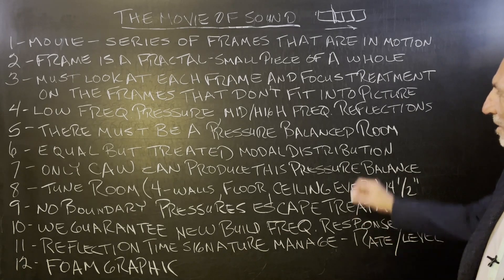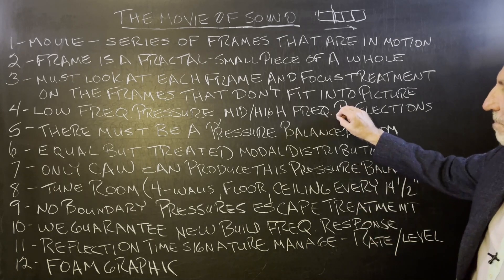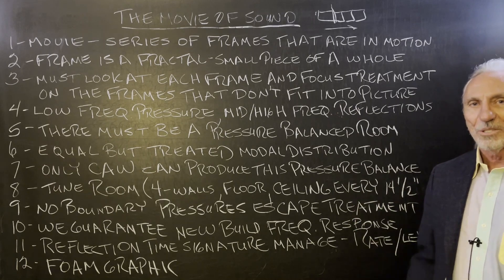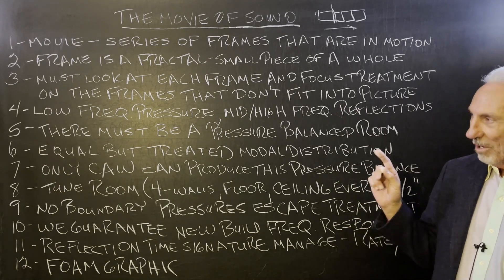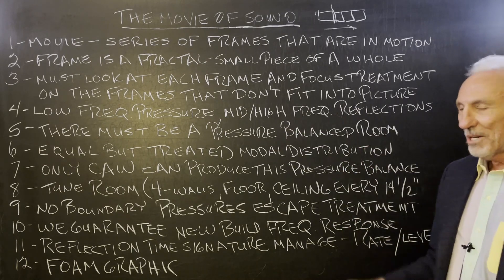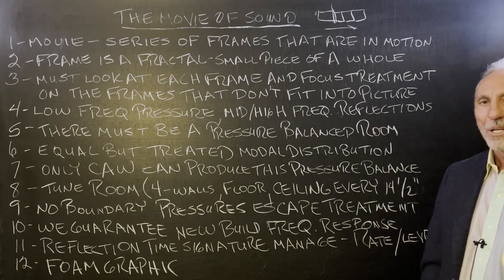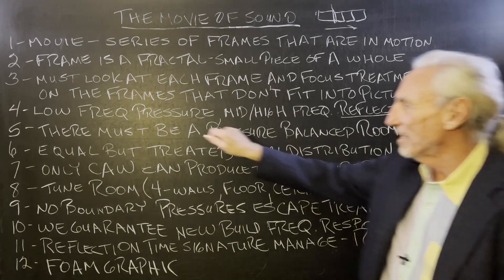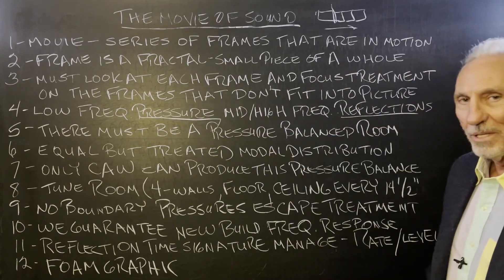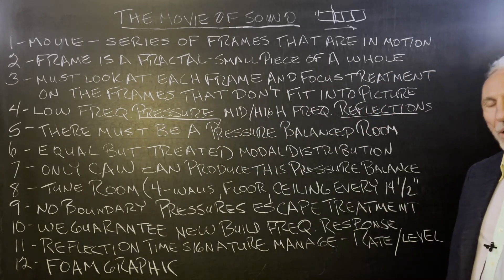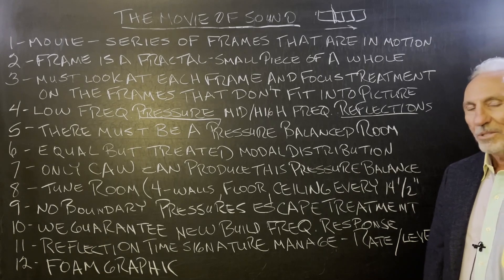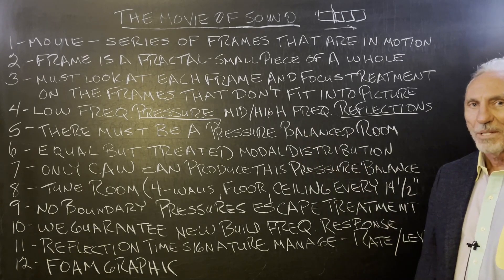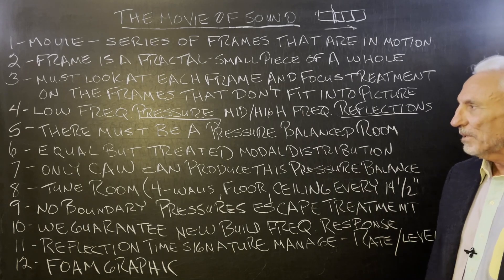You have to look at the whole picture: low frequency pressure, and mid and high frequency reflections. Just start to think that way — low frequency pressure below 100 Hz, and then middle and high frequency reflections. Those are your two main categories. This doesn't have to be hard. I know there's a lot of misinformation out there, but use these as your main points and you'll be a lot better off.